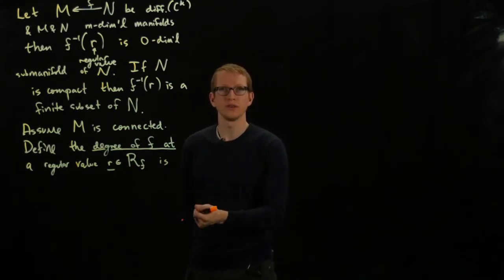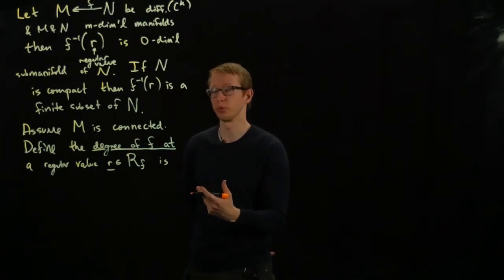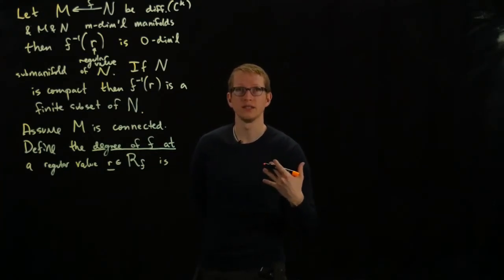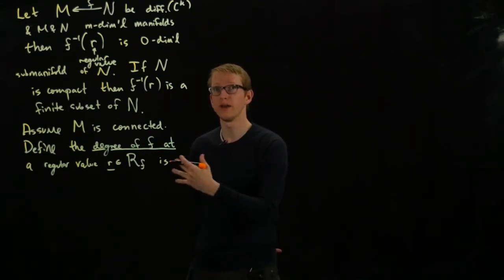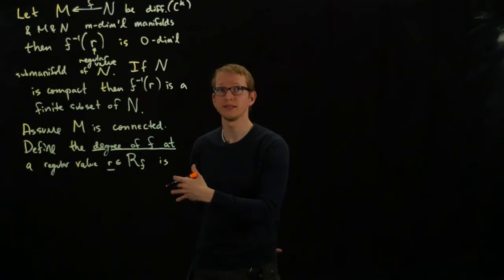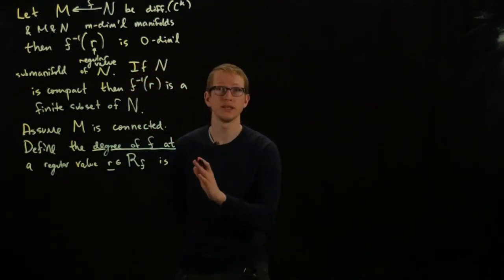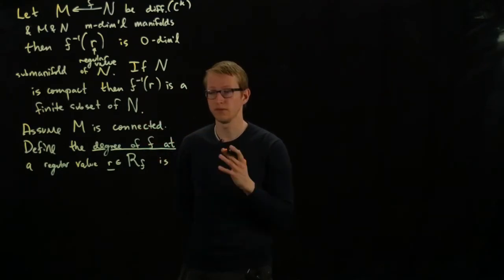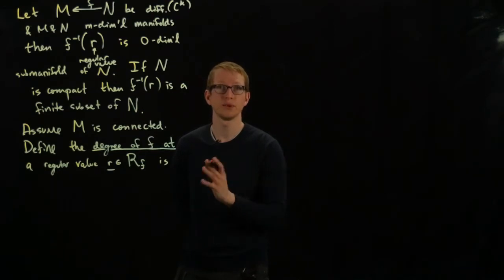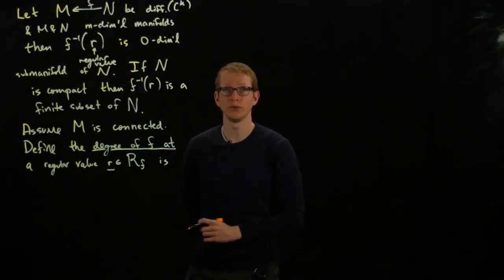At a regular value, the inverse image, we can look at those points, and those are some of the regular points of F, and on those points, the differential maps onto the tangent space. So every single vector in the image gets hit under this map. And in particular, since the dimensions of M and N are the same, a linear transformation between two finite dimensional spaces of the same dimension is an isomorphism if we know that that map is onto.